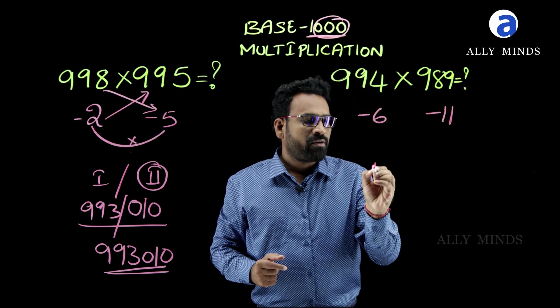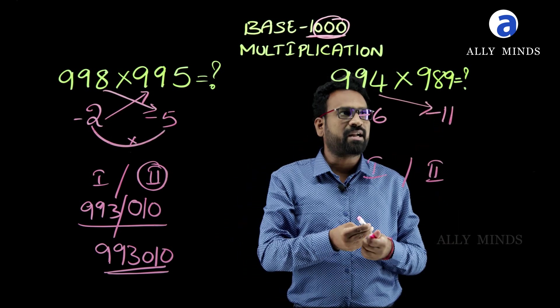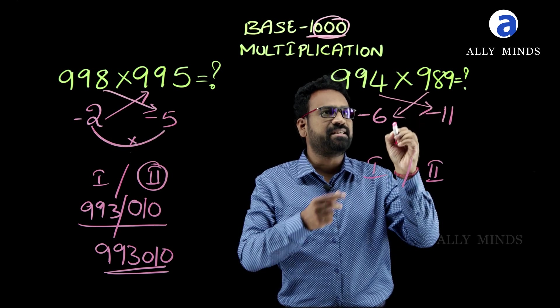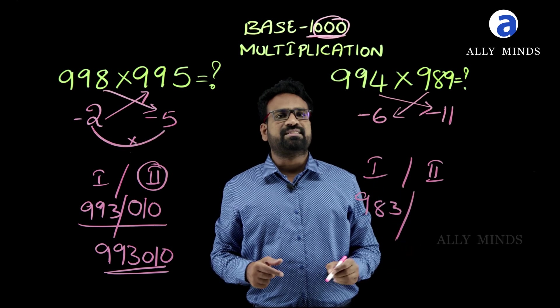For the first part of the answer, we have to apply the cross subtraction of 994 and 11, or cross subtraction of 989 and 6, which will give the same result of 983. This is the first part of the answer.